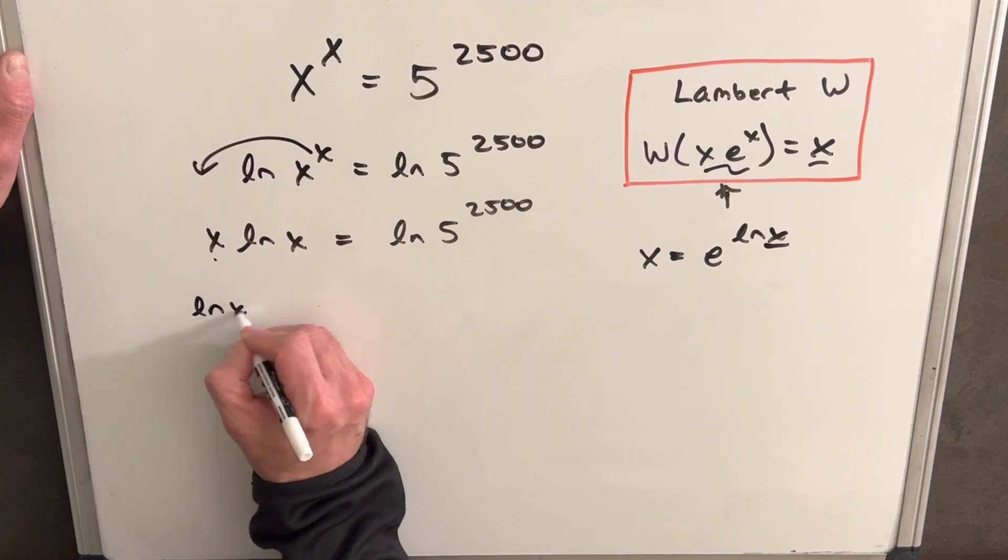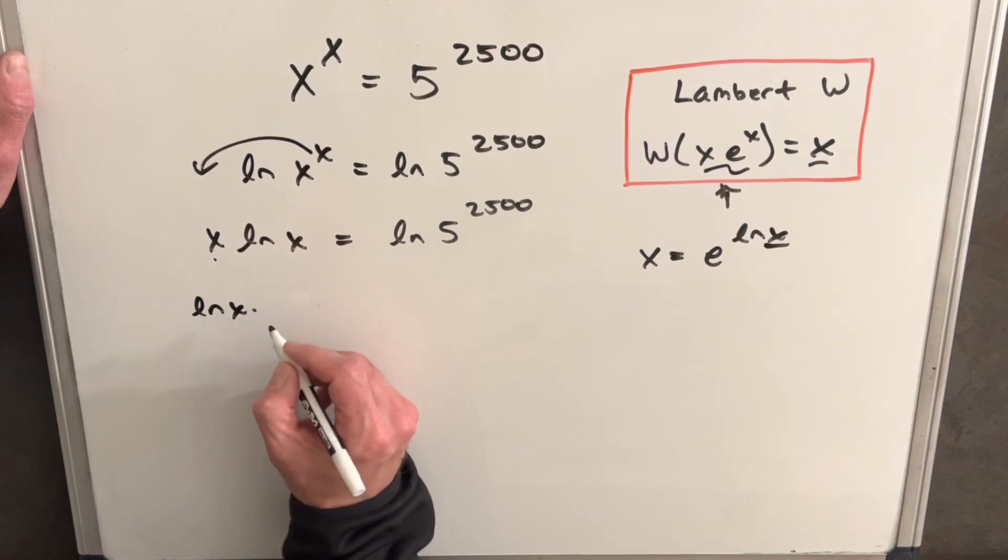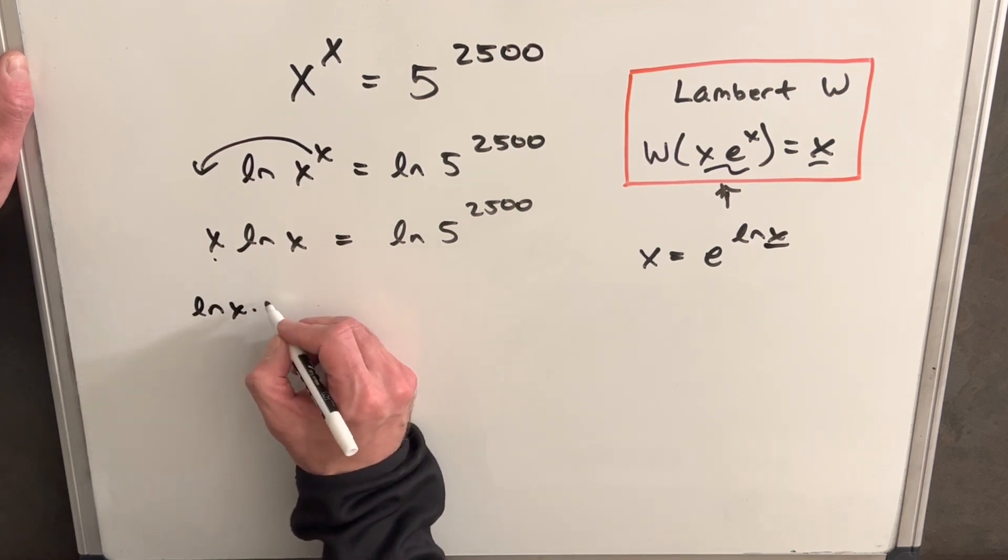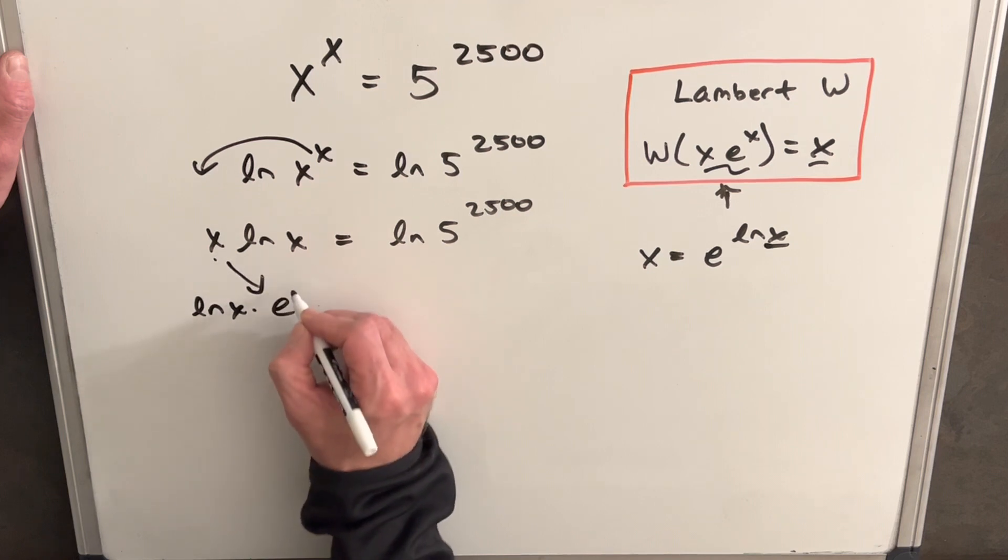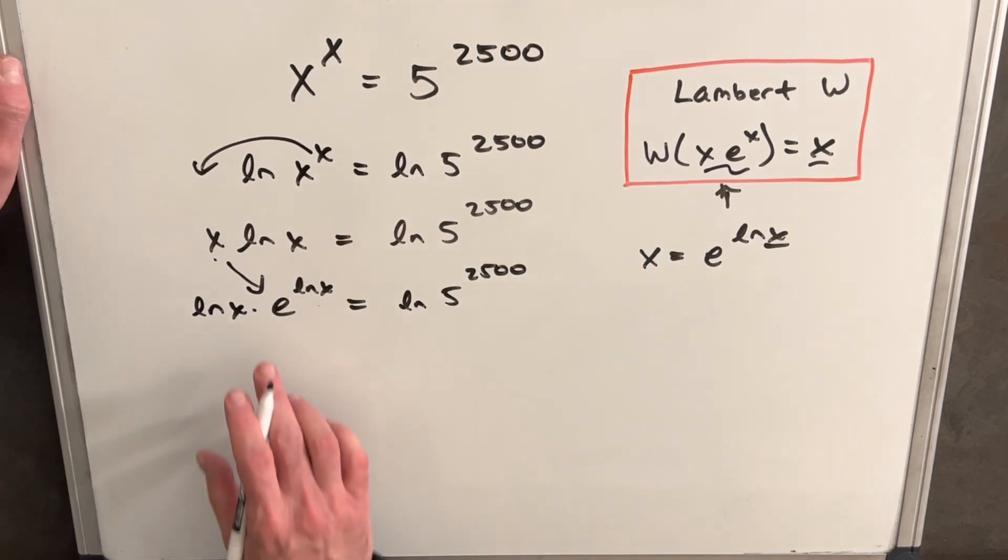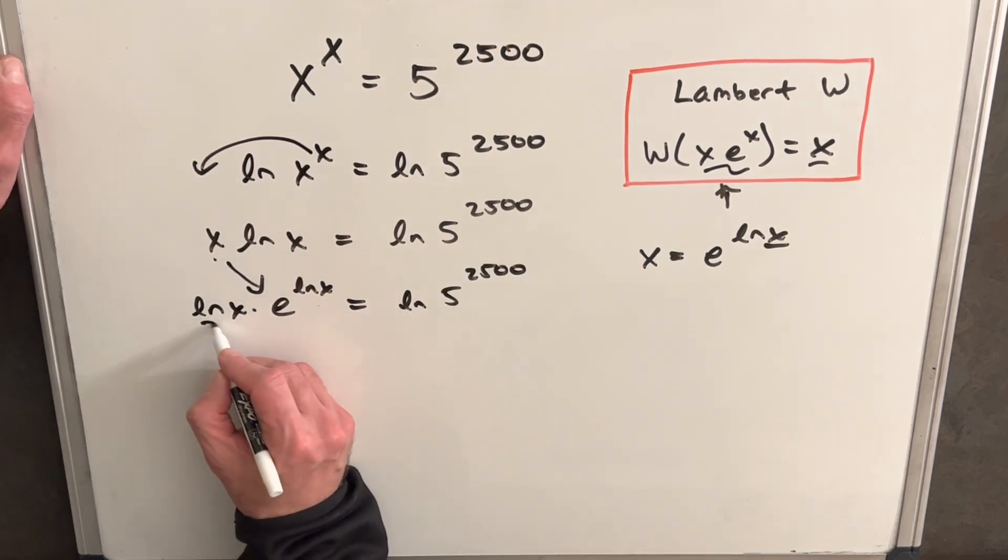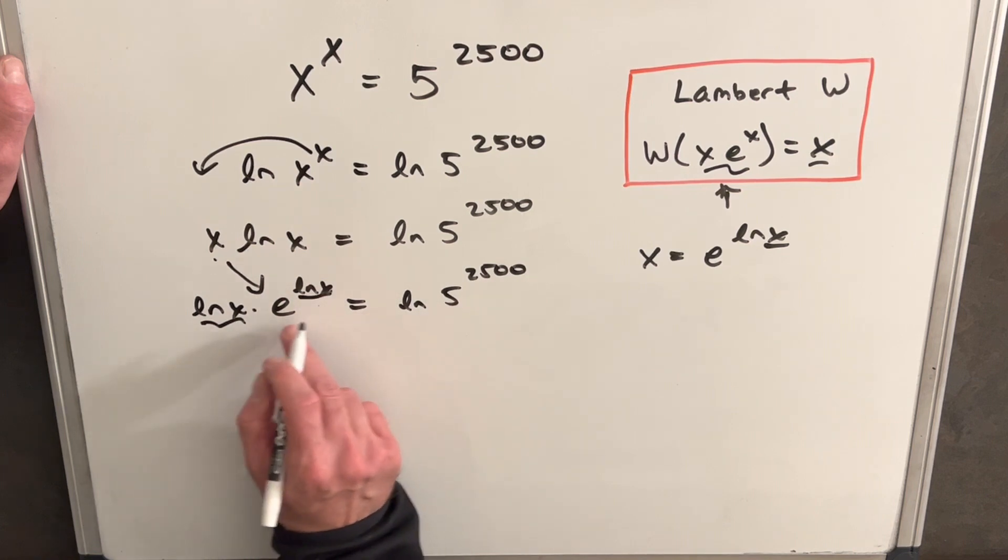So if I do that, I'm going to just switch the order. So we're going to have ln x times our e to the ln x. And then now you notice we are in this format. We have the same input and exponent on the exponential e.